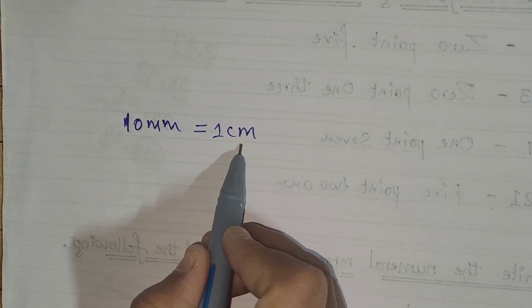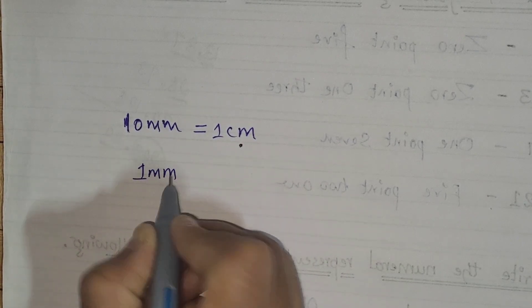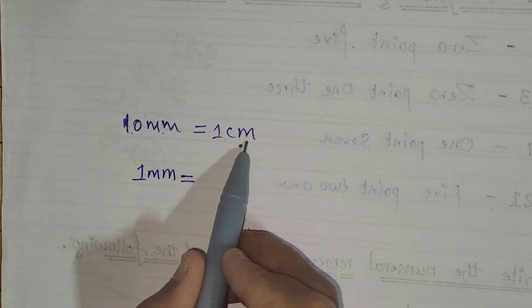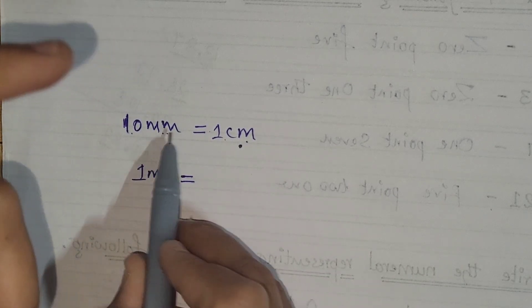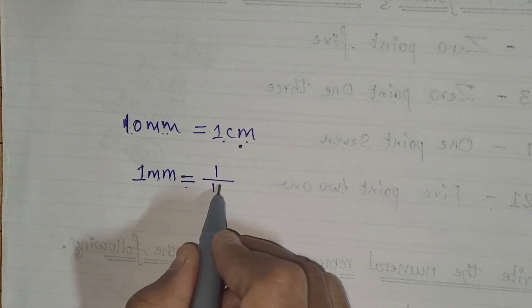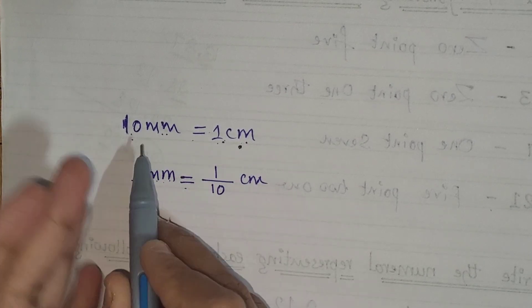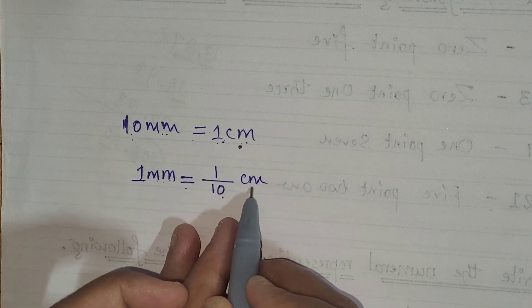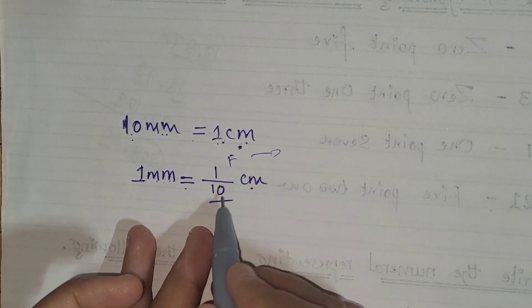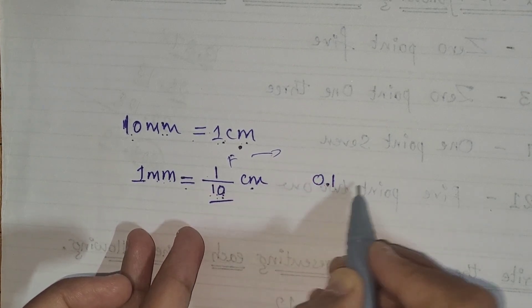So how do we convert millimeters into centimeters? For example, 1 millimeter equals how many centimeters? Since 10 millimeters equals 1 centimeter, 1 millimeter equals 1/10 of a centimeter. Now, how do we write this in decimal form? The numerator is 1, and there is one zero in the denominator, so we write 0.1 centimeter.